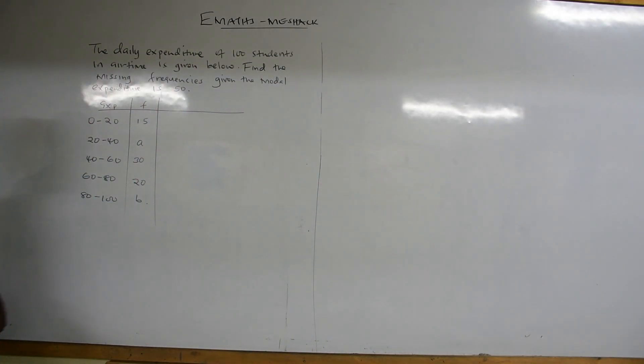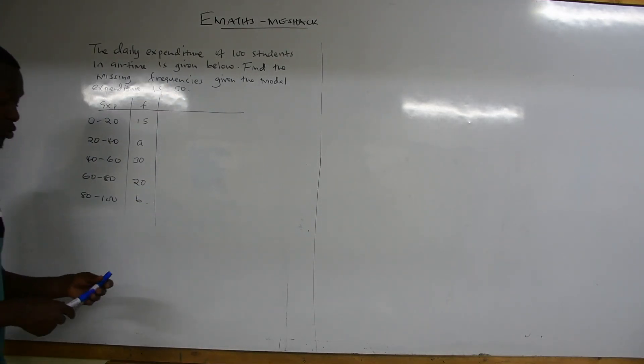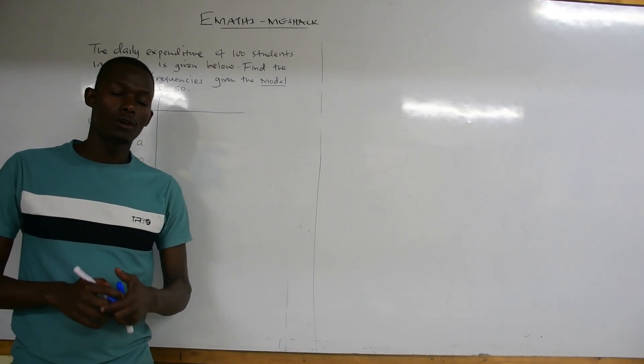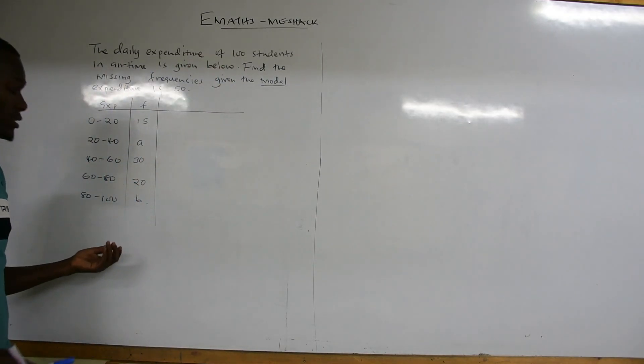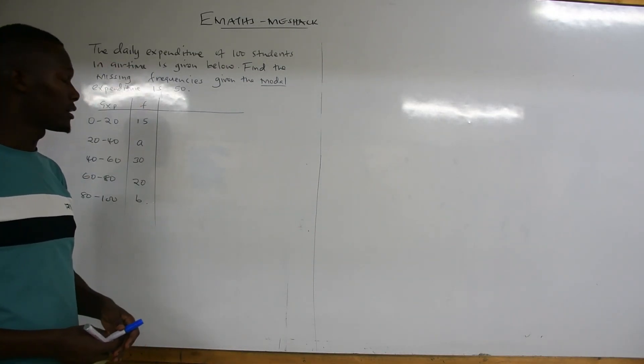Now, let's take a question on statistics where we're supposed to be getting the missing values and frequencies when we have been given a lot. We have been given the mode. If you have not checked the question where you have been given the median, kindly check it in the playlists given in statistics.